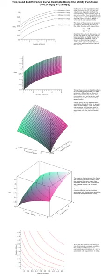Consider a particular bundle (x₀, y₀) and take the total derivative of u(x, y) about this point: du(x₀, y₀) = u₁(x₀, y₀)dx + u₂(x₀, y₀)dy, where u₁ is the partial derivative of u(x, y) with respect to its first argument, evaluated at (x₀, y₀), and likewise for u₂.